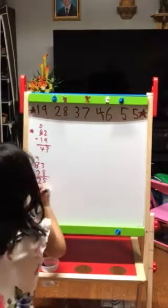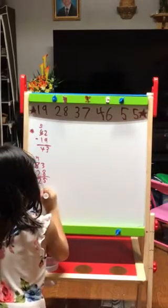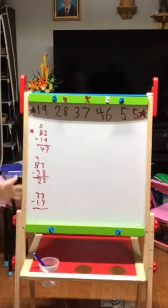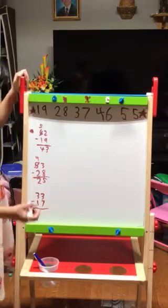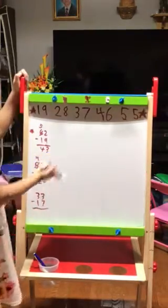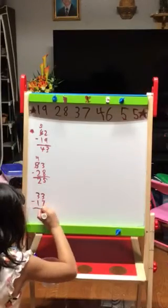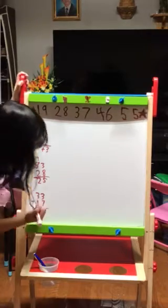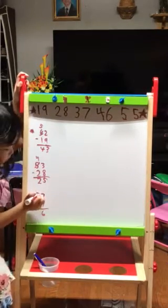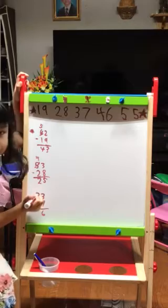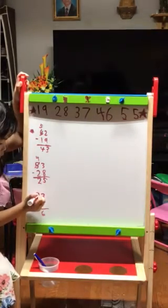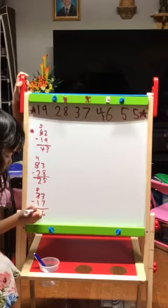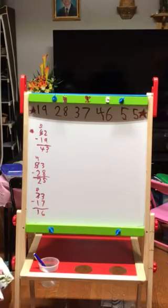The next problem is 33 minus 17. 3 can't subtract 7, so we remember 7's partner, which is 3. We add 3 to 3 and we get 6. Since we did that one time, 3 goes down by 1 and it becomes 2. 2 minus 1 equals 1. So your answer should be 16.